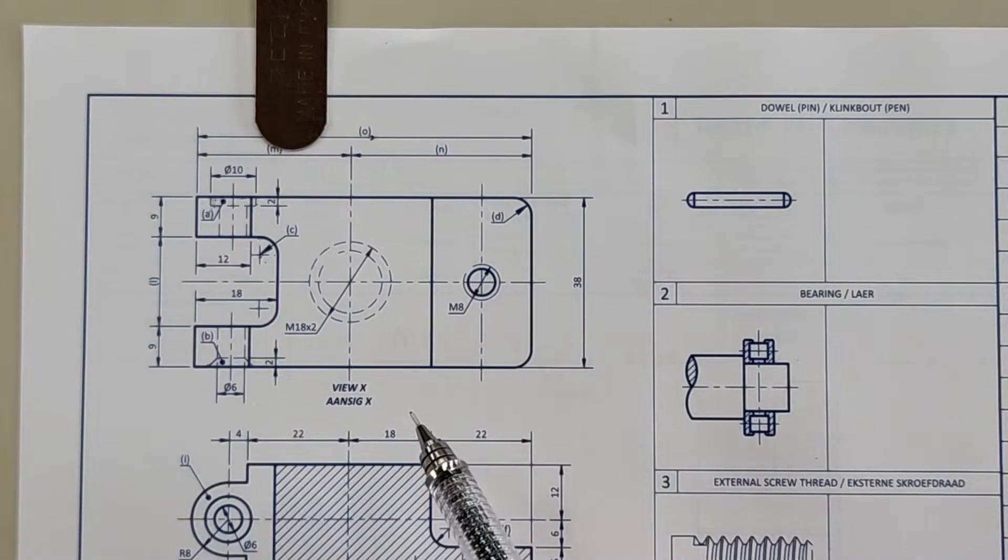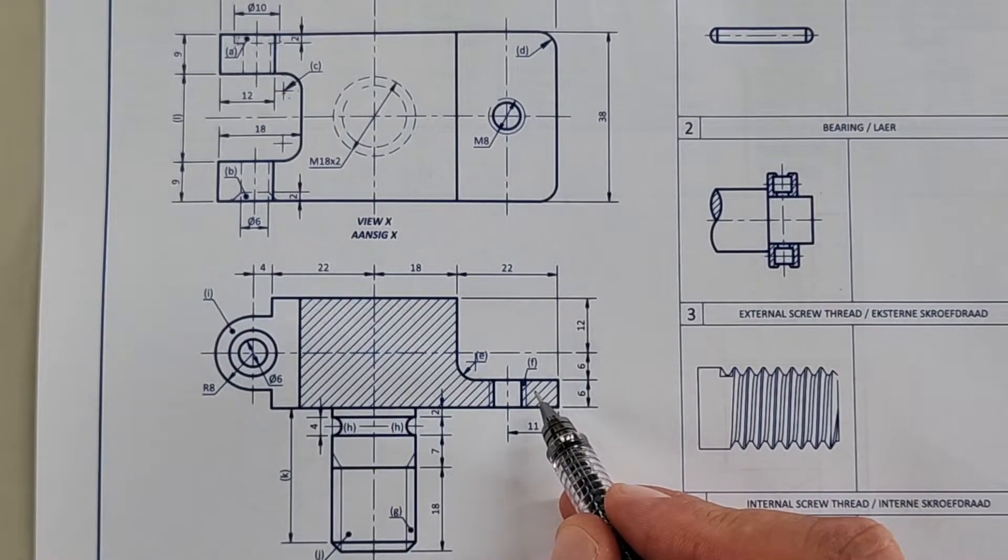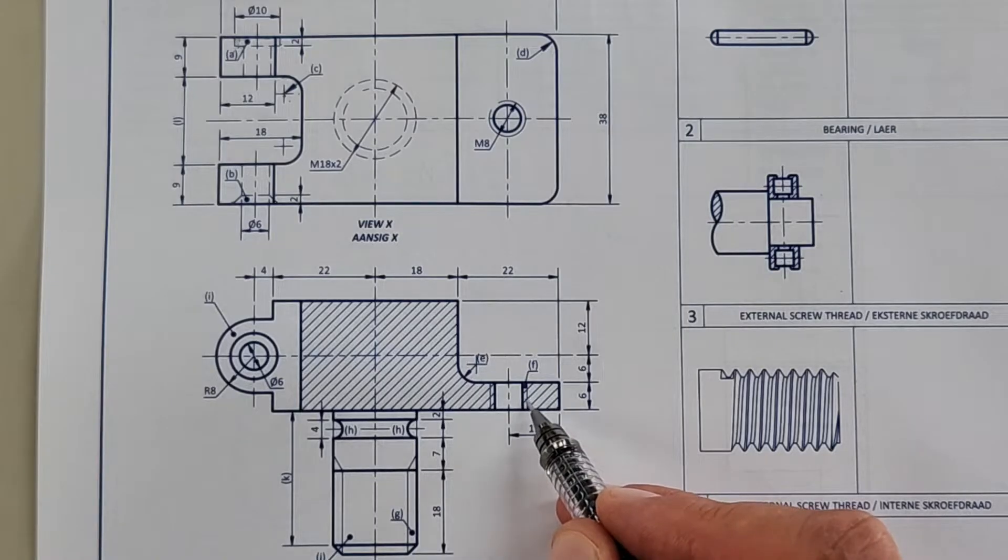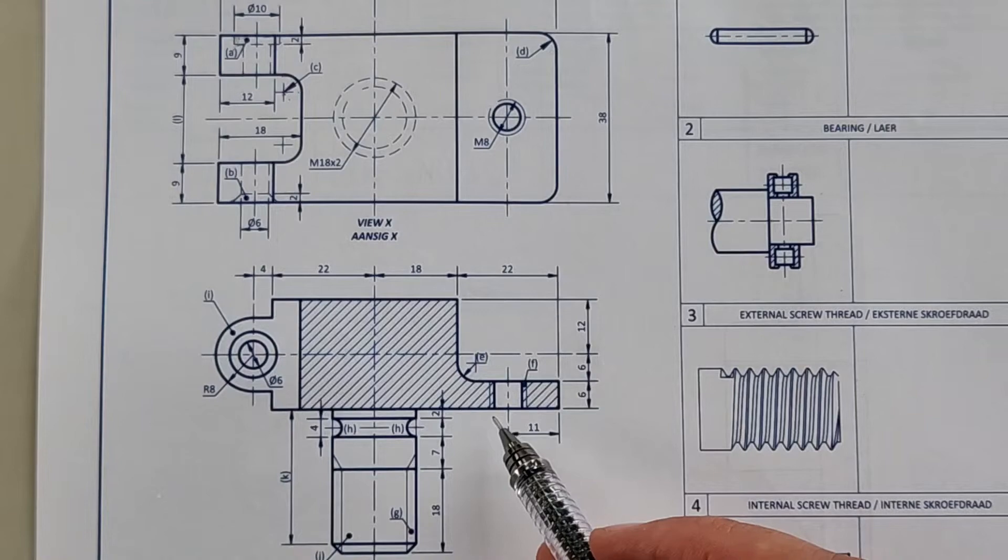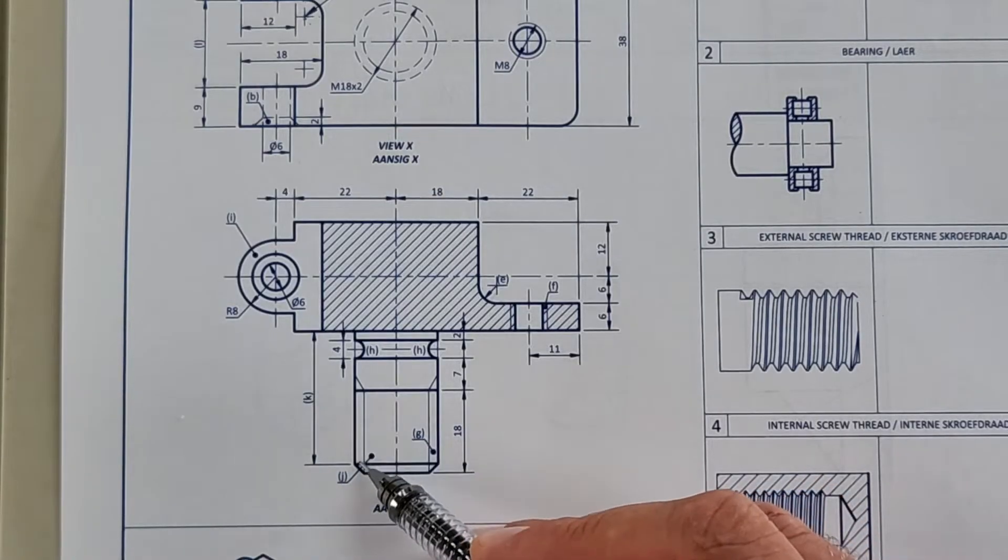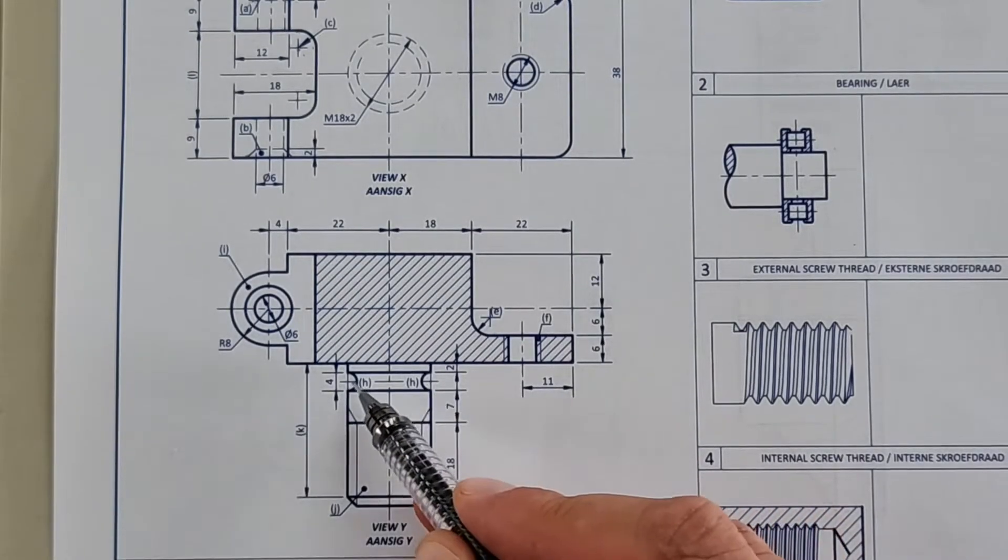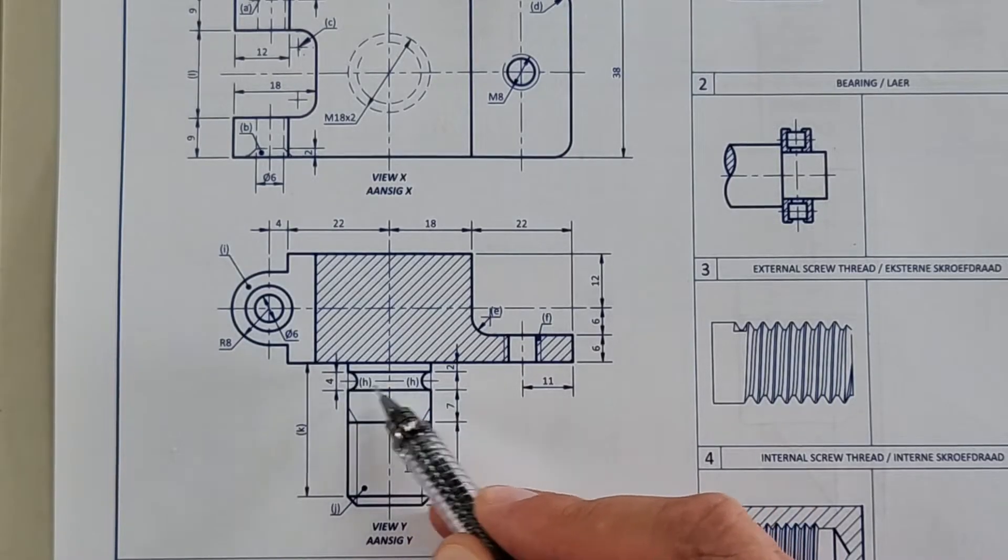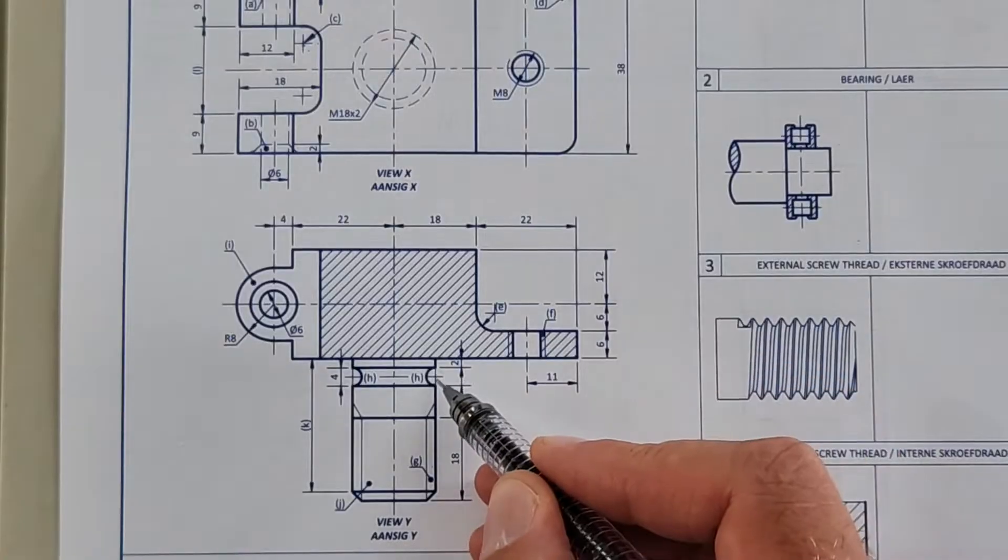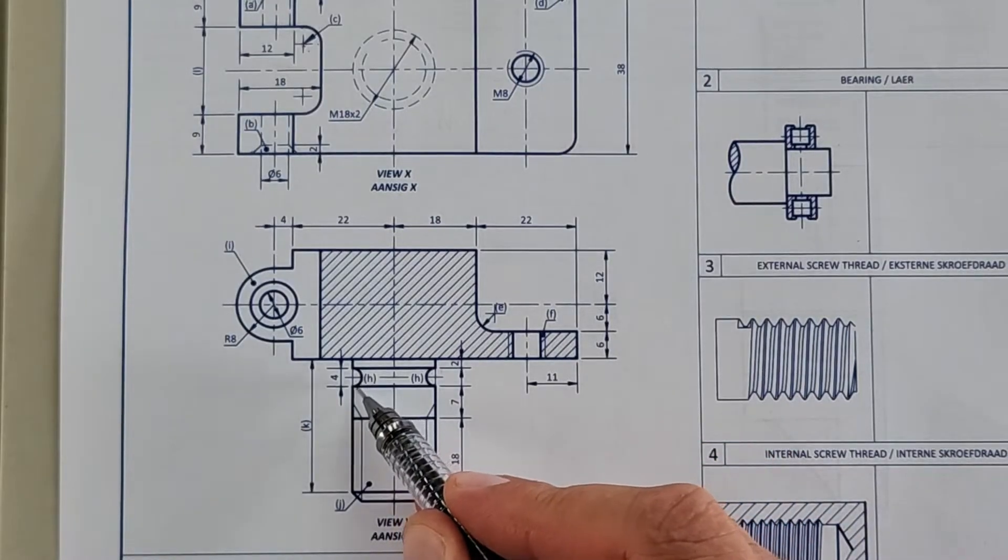E here, where is E? There it is at the bottom. E is a fillet. We said that just now. And then F here is an internal screw thread, or a getapte gat, internal screw thread going all the way through. Then G, there it is. That is our external screw thread, eksterne skroefdraad. H is an insniding, undercut. Some of you are thinking of a hair undercut. No. Undercut, so when this is machined there is this undercut, it goes all the way around, and you would maybe have an o-ring that goes over that, a type of an o-ring that moontlik oor it gaan. Maar dit is a insniding.